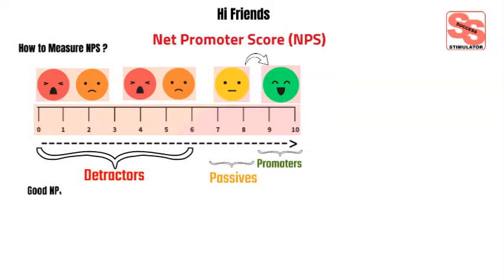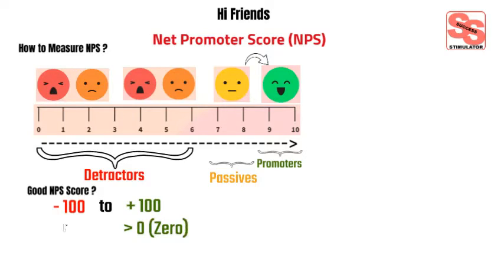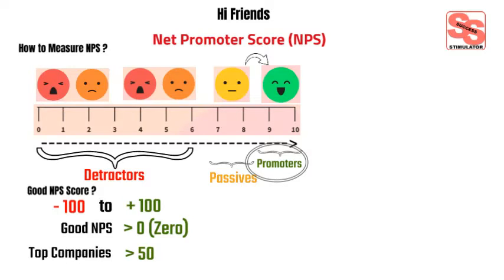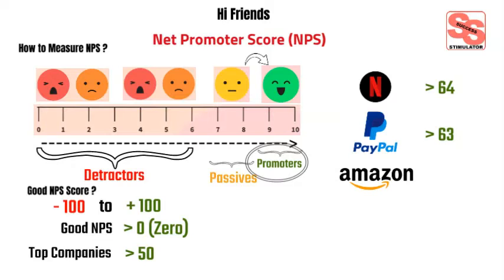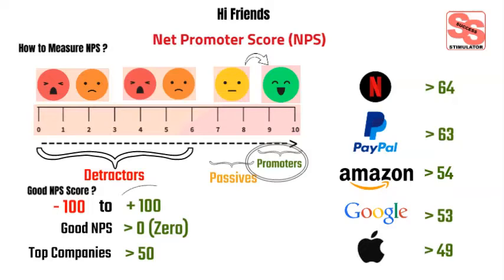What is a good NPS score? NPS score will range between minus 100 to plus 100. Any score above 0 reads as good, because it indicates that a business has more promoters than detractors. Top-notch companies generally have an NPS of 50 and above. In 2018, Netflix had an NPS of 64, PayPal scored 63, Amazon 54, Google 53, and Apple 49. A perfect score of 100 indicates that every survey respondent would recommend a company to someone else — a score that nobody has ever achieved.